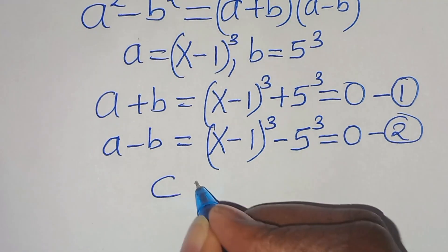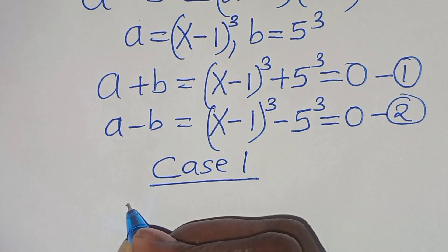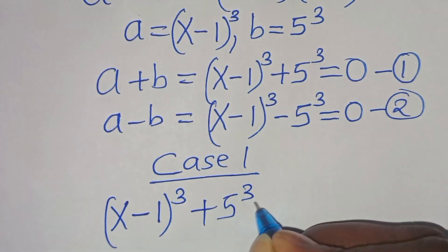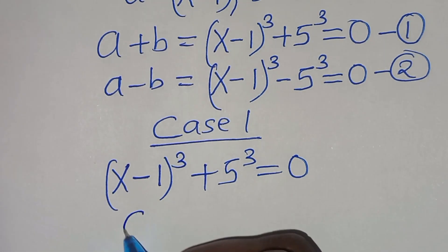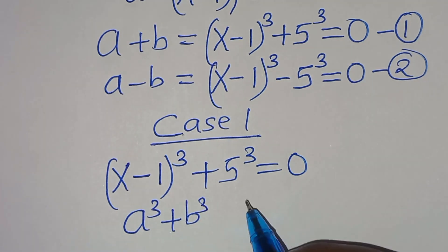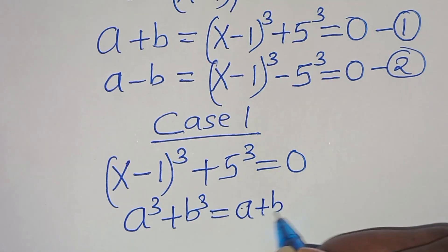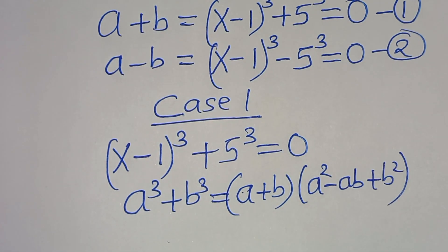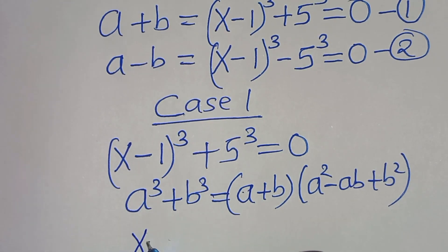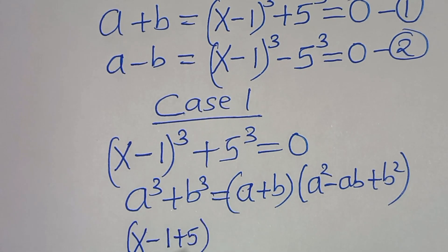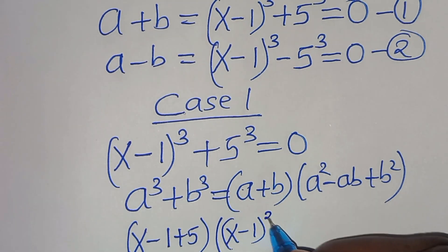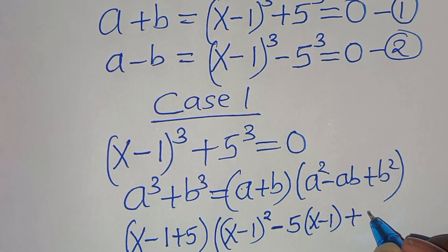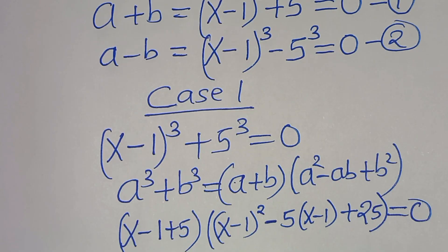Now let's start with equation 1, case 1. In case 1 we have (x minus 1)^3 plus 5^3 equals 0. This is the sum of two cubes, in the form a³ plus b³, which factors as (a plus b)(a² minus ab plus b²). Applying this identity we get (x minus 1 plus 5) times [(x minus 1)² minus 5(x minus 1) plus 25] equals 0.